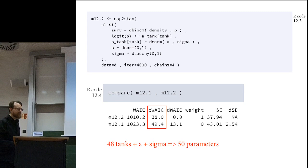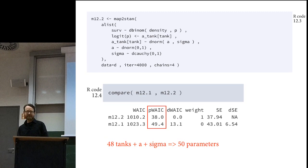In the model comparison, if we compare the varying intercepts model—model 12.2—to the so-called fixed effects model, where there's an intercept for each tank but no pooling, the effective number of parameters for the varying intercept model is lower, even though it has two more parameters than the fixed effects model. This violates something I told you in Chapter 6: that adding parameters always gives you a better fit to sample. That's false. It's true in classical statistical models with only one level, but the relationships between parameters can be very complex in general.